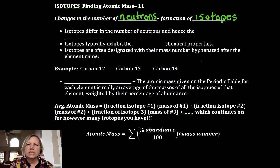So changes in the number of neutrons result in isotopes. They have different mass numbers, and here's what's interesting.